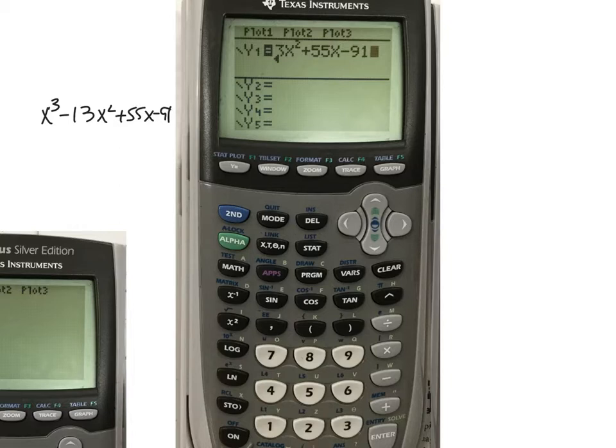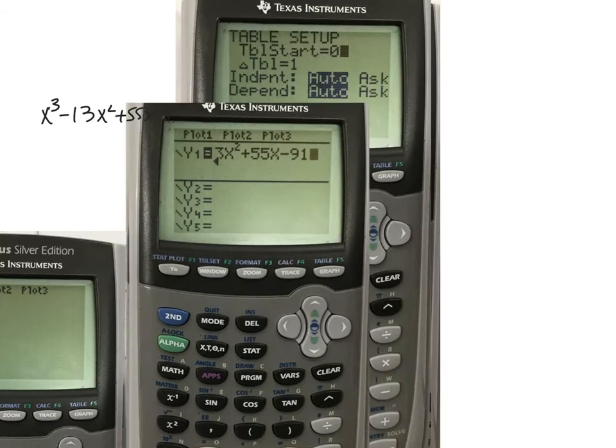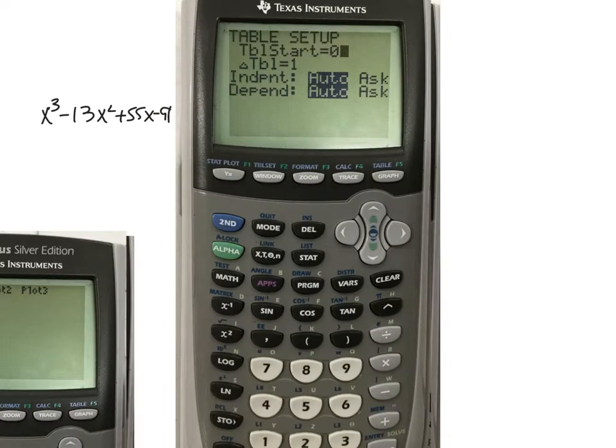So first of all, table settings is right here above window and it's in blue. So we're going to hit second, table set. You should have a window that kind of pops up looking like this and it's just asking you two things. I'm really only showing you this in case it is in a weird spot. So you want to make sure your table starts at zero. That's what it's asking. Where do you want your table to start? Zero. What do you want it to count by? Ones, right? You don't want it counting by some crazy decimal. All right. So just make sure those things are set.